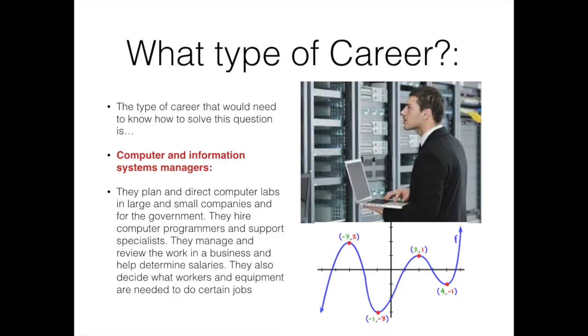Finally, now that I have completed the question, what type of career would use polynomial equations? Computer and information system managers do. They plan and direct computer labs in large and small companies and for the government. They hire computer programmers and support specialists. They manage and review the work in a business and help determine salaries. They also decide what workers and equipment are needed to do certain jobs.